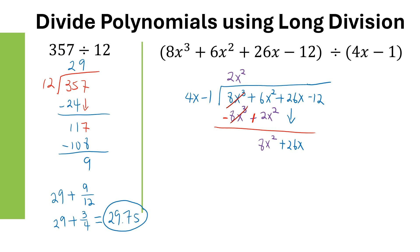Repeat the same process: take 8X squared divided by 4X, giving positive 2X. Multiply: 2X times 4X is 8X squared, and 2X times negative 1 is negative 2X. When we subtract, change all the signs. 8X squared disappears, and adding the X terms gives 28X.